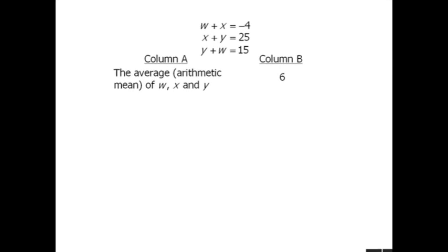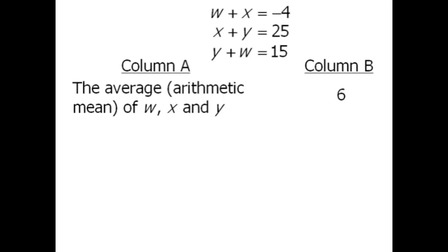All right, beginning with column A, if we want to find the average of W, X, and Y, we need to find the sum of those three values and then divide that sum by 3.